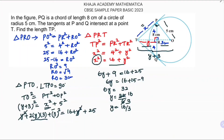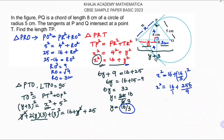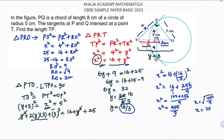Now I'll find x by substituting y equals 16/3 back into x² equals 16 plus y². So x² equals 16 plus (16/3)², which is 16 plus 256/9. Converting: 16 times 9 equals 144, so x² equals 144/9 plus 256/9 equals 400/9. Therefore x equals √(400/9) equals 20/3 centimeters.